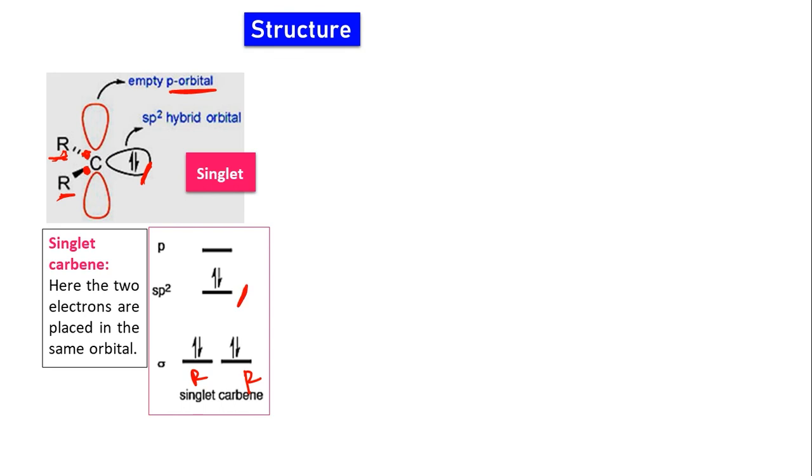To summarize singlet carbene: 2 sigma bonds form with 2 R groups using 2 sp2 orbitals; the third sp2 hybrid orbital contains the 2 electrons as a lone pair; and the pure p orbital is vacant.